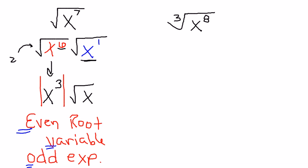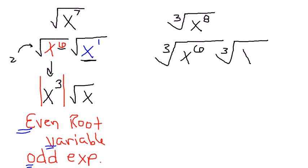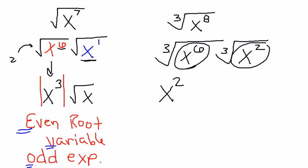On to the next problem. This time, with the cube root of x to the 8th, I'm looking for groups of three. I'm really looking for the biggest multiple of 3 within 8. The biggest multiple of 3 within 8 is 6. So I would factor this to be x to the 6th times x squared. x to the 6th is how many groups of three? Two. So I'd be able to take that outside the radical as an x times x or x squared. This x squared over here in the cube root — that's not enough to make a group of three, so it's just going to stay on the inside. My final answer would be x squared times the cube root of x squared.